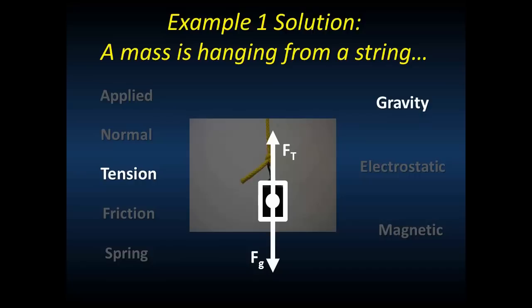Well hopefully your free body diagram looks something like this. Is there a planet nearby? Yes. So we have the force of gravity. Is anything touching the object? Well only the rope that's holding it up, so we'll have a tension force. Since the mass doesn't accelerate up or down, the two forces must be equal.